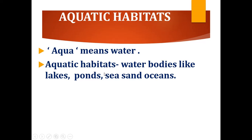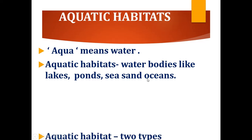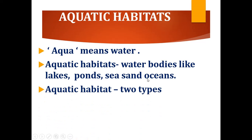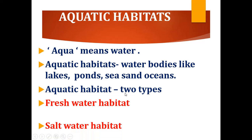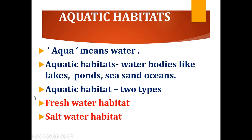Water bodies like lakes, ponds, seas, and oceans are called aquatic habitats. Aquatic habitats are of two types: freshwater habitat and saltwater habitat.